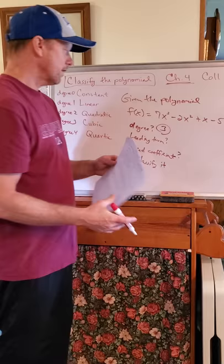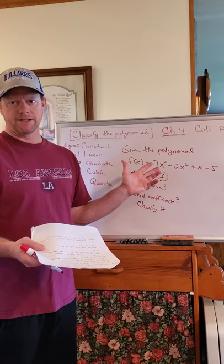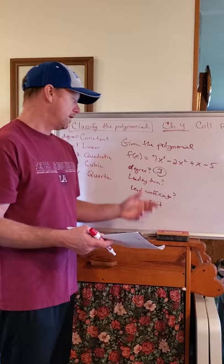The leading term. In this equation, there are one, two, three, four terms in the equation. And the leading term, of course, you always need to write stuff in standard form from the highest exponent down to the constant. If it's not in that form, you need to put it in that format from the highest exponent term down to the constant. The leading term in this case is going to be 7x cubed.